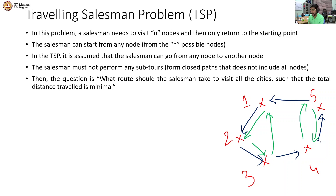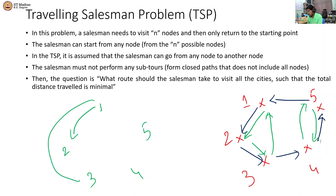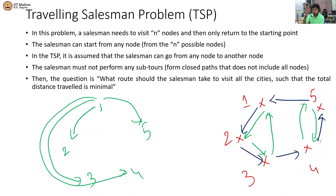The question in a Travelling Salesman Problem is: given a set of nodes — say 5 nodes — in what order should the salesman cover these nodes without having any sub-tours? The assumption is that he can start from any node and go to any node. This is called a Hamiltonian cycle. Given a Hamiltonian cycle without any sub-tours, what is the best possible route for that salesman? That is the Travelling Salesman Problem in a nutshell.